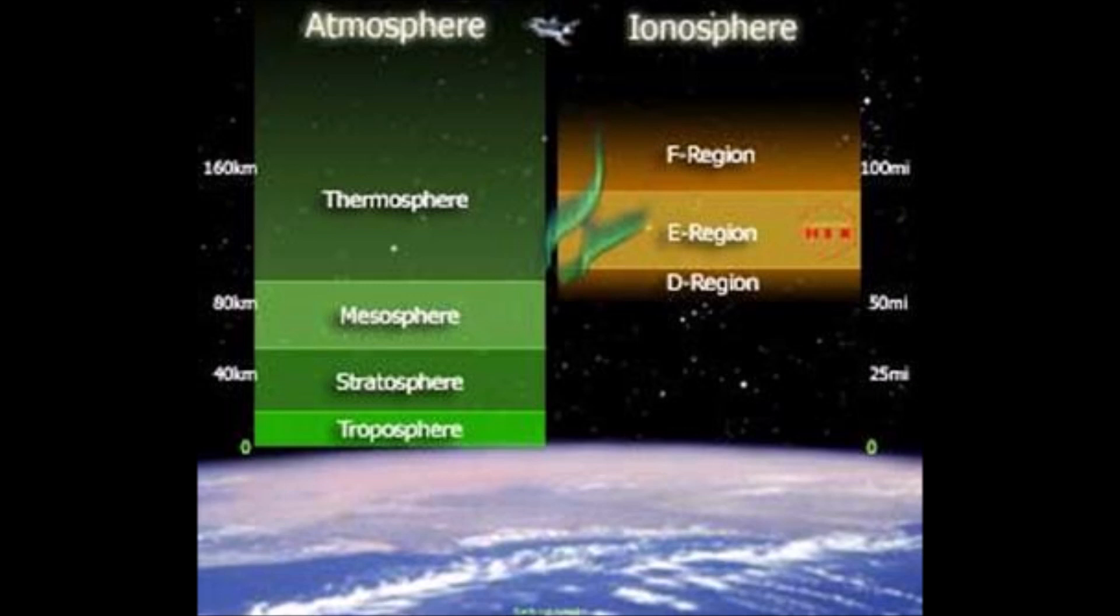So, this all leads into why hams and shortwave radio broadcasters use different frequencies, depending on the time of day. Okay, propagation, the ionosphere is not always the same, and that's kind of what makes shortwave interesting for a lot of people, but challenging for others. So we have the D region, the E region, and the F region at the top.